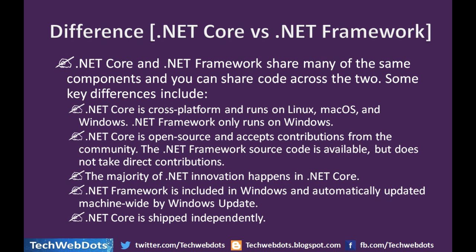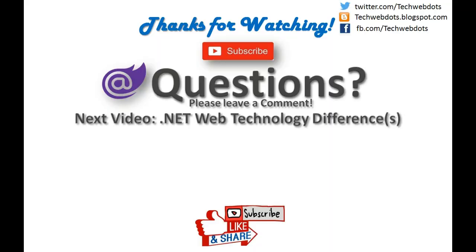On the final note, what is the main difference between .NET Core and .NET Framework? They share many of the same components and you can share code across the two. Key differences: .NET Core is cross-platform and runs on Linux, macOS, and Windows, while .NET Framework only runs on Windows. .NET Core is open source and accepts community contributions, but .NET Framework source code is available without accepting direct contributions. The majority of .NET innovations happen in .NET Core. .NET Framework is included in Windows and updated machine-wide via Windows Update, while .NET Core is shipped independently.